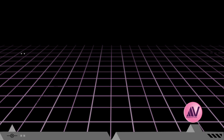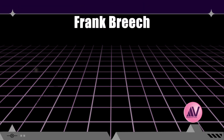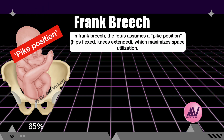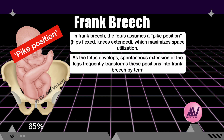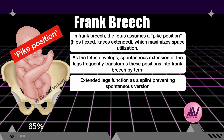In frank breech, the fetus assumes a pike position — hips flexed and knees extended — which maximizes space utilization. As gestational age advances, the fetus grows larger and amniotic fluid volume diminishes, restricting movement. Spontaneous extension of the legs frequently transforms other positions into frank breech by term. Frank breech becomes more stable and challenging to spontaneously alter compared to complete or footling breech; the legs function as a splint. Frank breech is the most prevalent type at term.